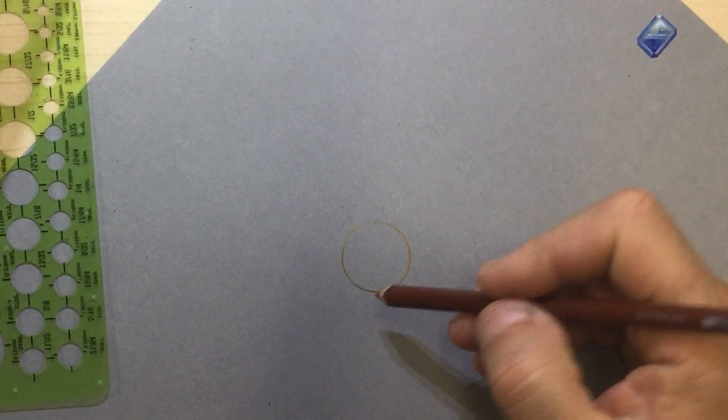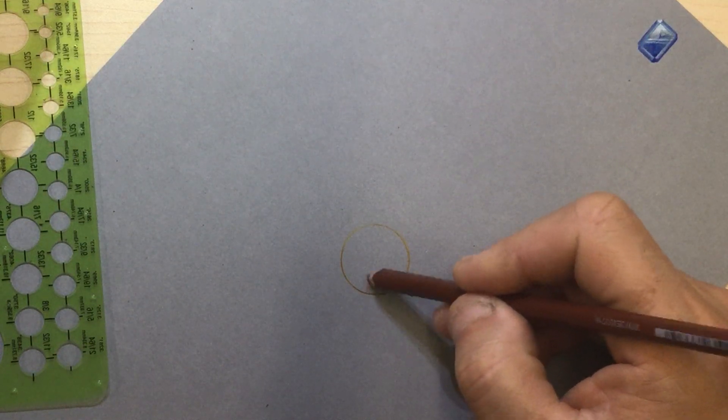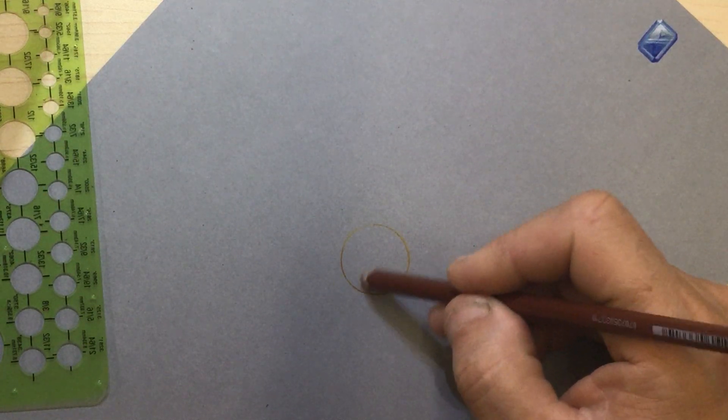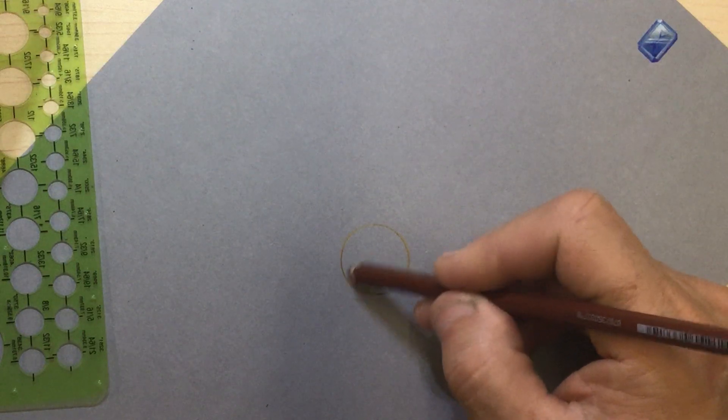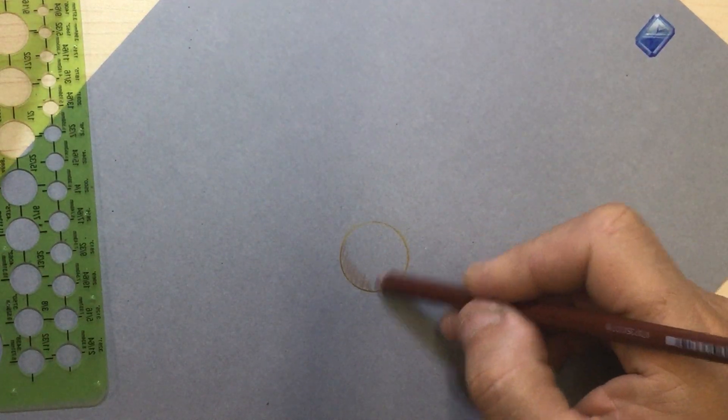So just like you did before, I like to start at my core shadow, some people work the other way. This is my Sienna, and I'm just working towards my highlight, which is going to be over here.